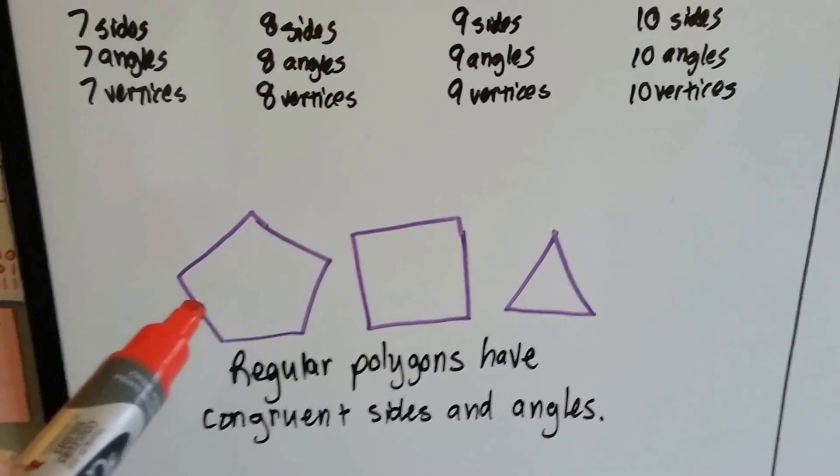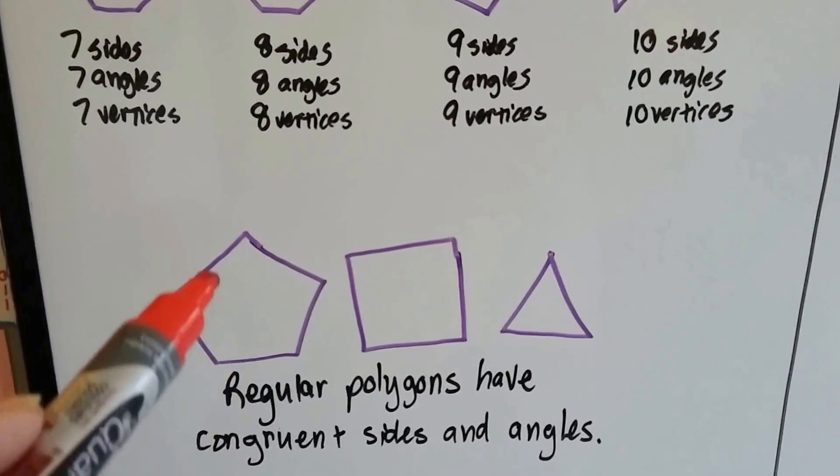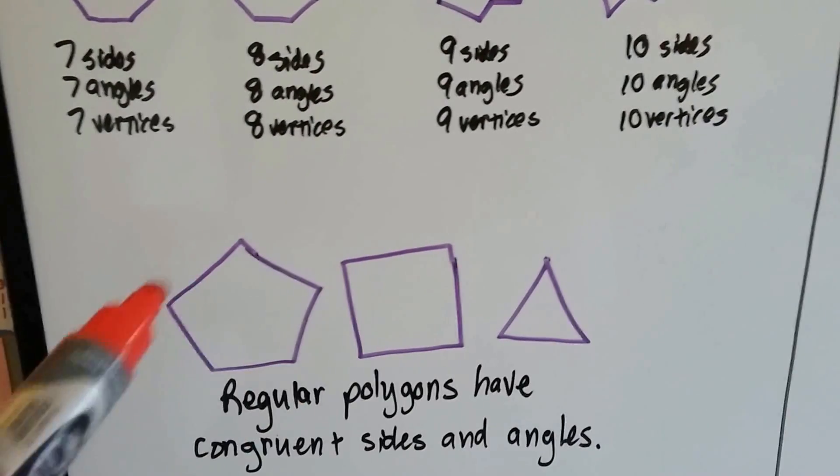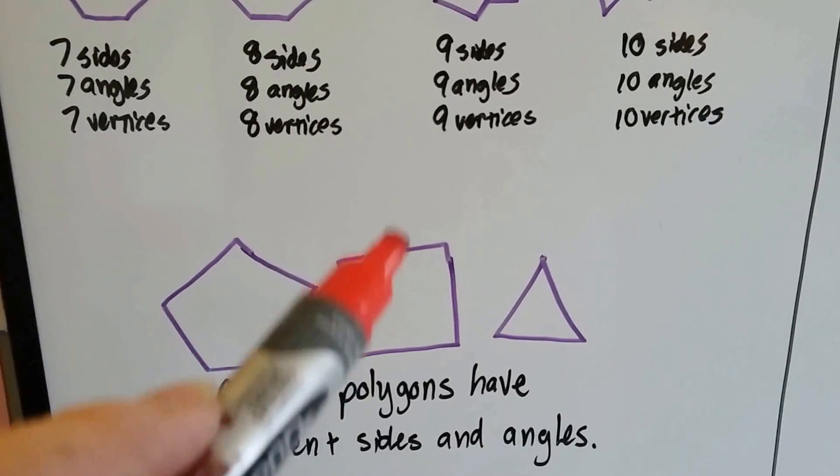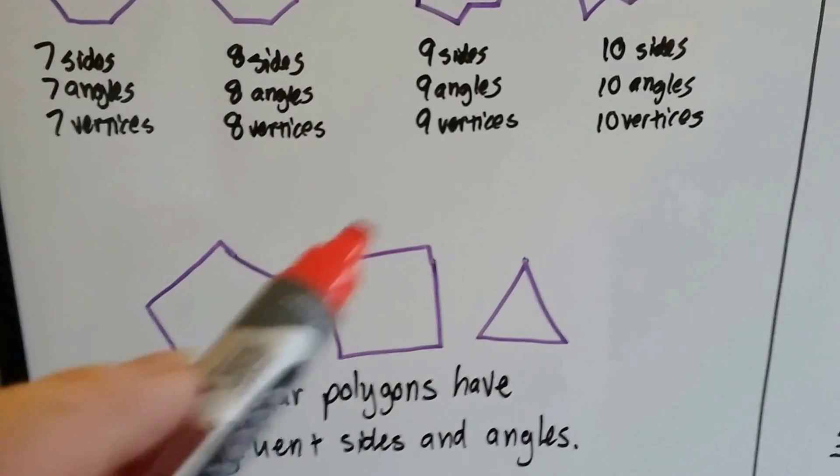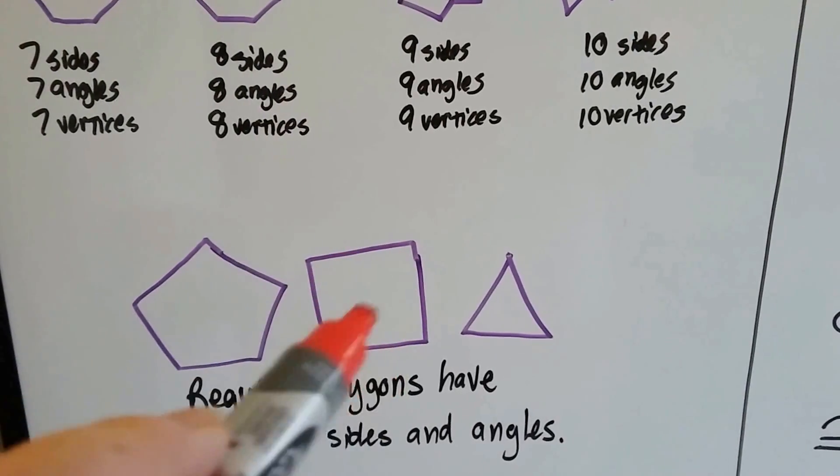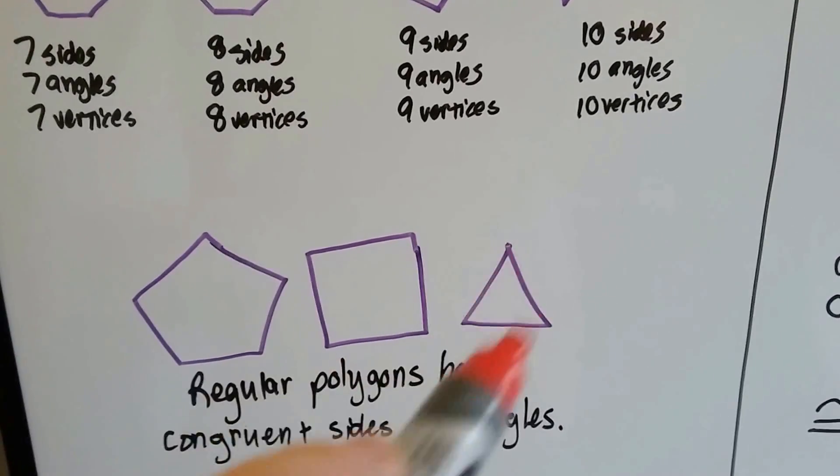Regular polygons have congruent sides and angles. A regular pentagon has 5 equal sides and angles. A regular square has 4 equal sides and angles.